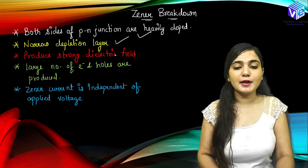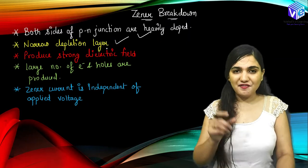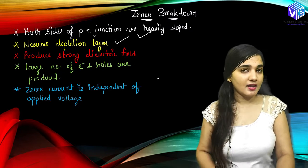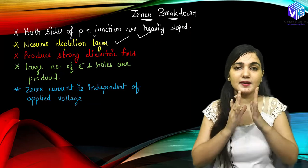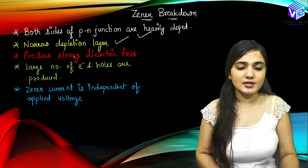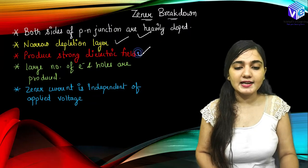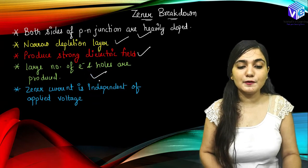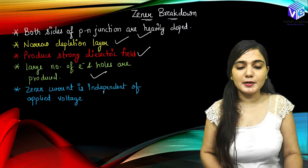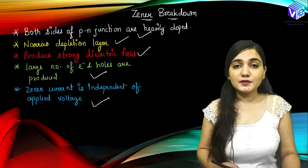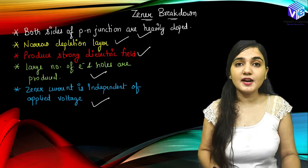Now here we will be having a narrow depletion layer, because if we have very high doping, the depletion layer width is going to decrease — the depletion layer width is inversely proportional to the doping concentration. This is going to produce a very strong electric field. So we will be having a very strong electric field, a large number of electron-hole pairs are produced, and the Zener current will be independent of the applied voltage. These are all of the characteristics of Zener breakdown.